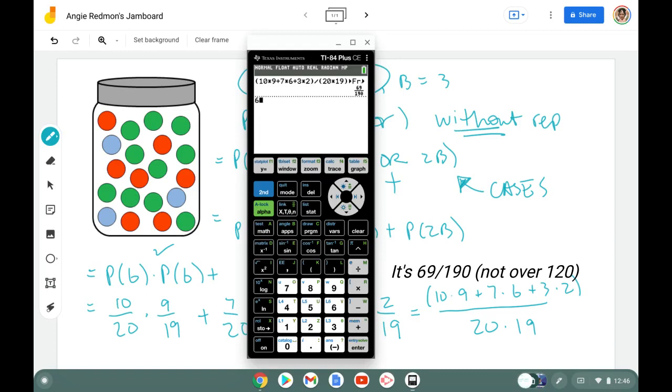If I wanted that as a decimal instead over 120, oh, 190. So 69 over 190 is the probability of getting two of the same color.